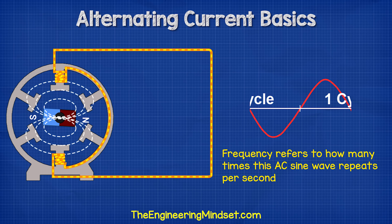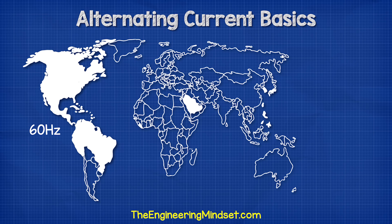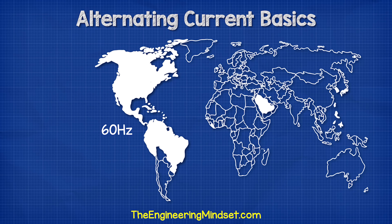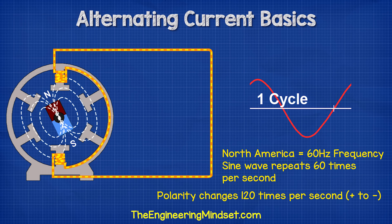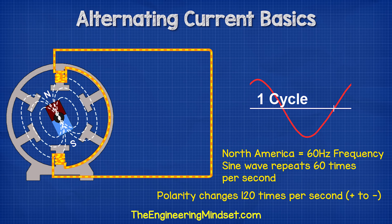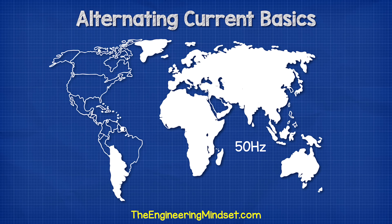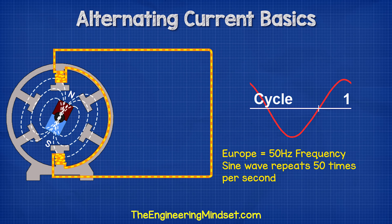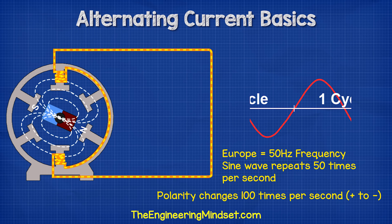Frequency refers to how many times this sine wave repeats per second. In North America and a few other parts of the world, we find 60 hertz electricity, which means the sine wave repeats 60 times per second. And as each wave has a positive and a negative half, this means its polarity will therefore reverse 120 times per second. In the rest of the world, we mostly find 50 hertz electricity, so the sine wave repeats 50 times per second and therefore the current reverses 100 times per second.